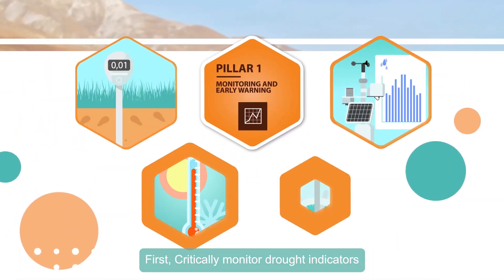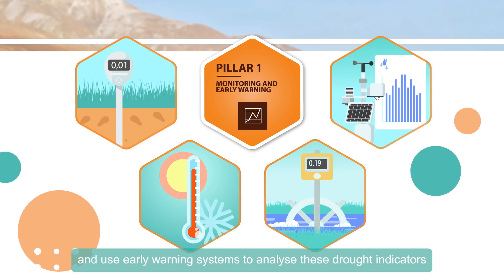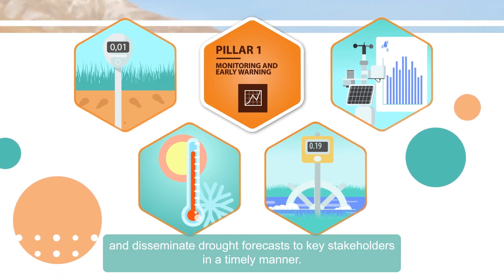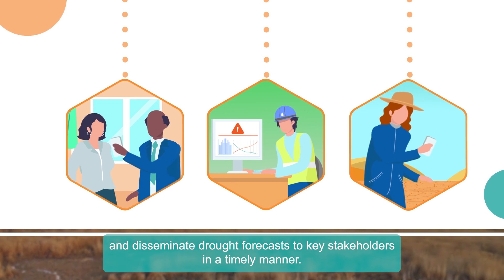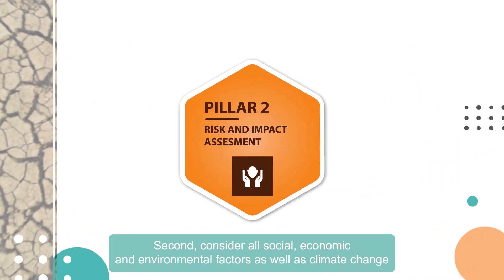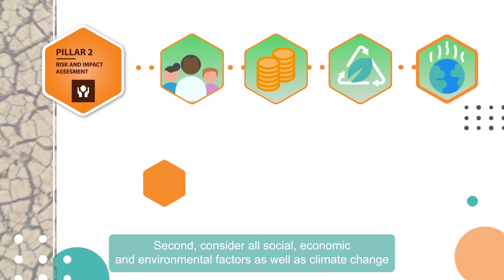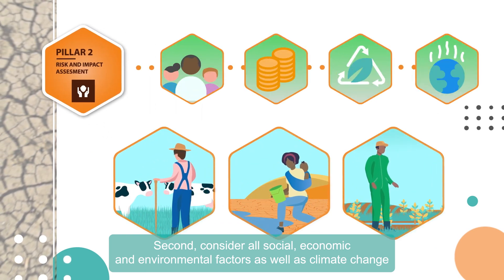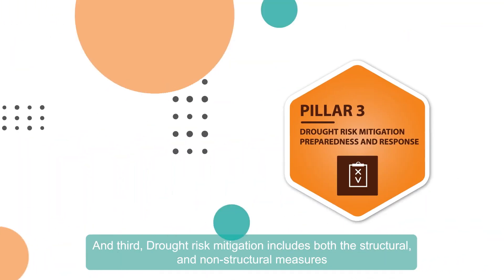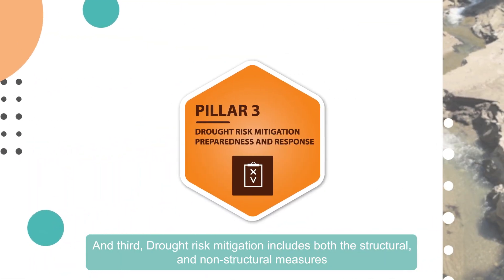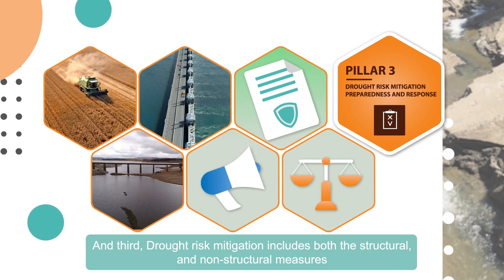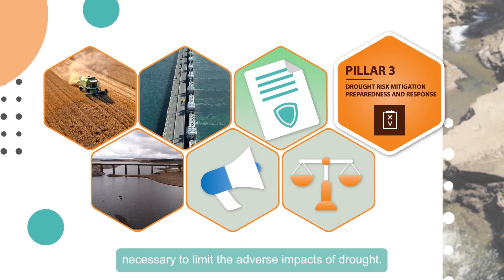First, critically monitor drought indicators and use early warning systems to analyze these drought indicators and disseminate drought forecasts to key stakeholders in a timely manner. Second, consider all social, economic and environmental factors as well as climate change to determine a community's susceptibility to drought hazards. And third, drought risk mitigation includes both the structural and non-structural measures necessary to limit the adverse impacts of drought.